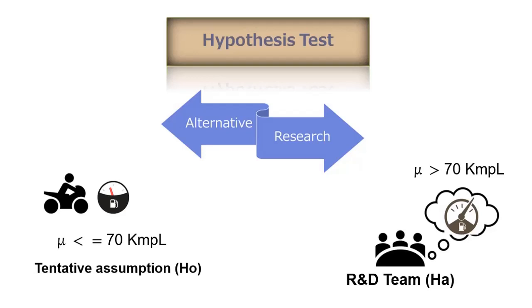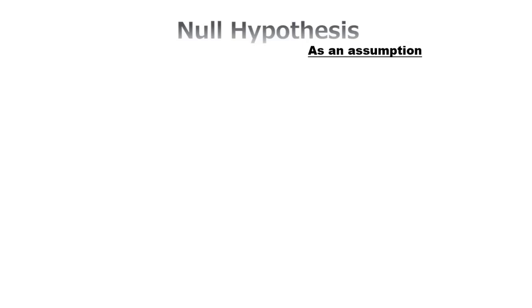We will make the tentative assumption that the new design is not any better than the current design, so that equation is μ less than or equal to 70. If sample results lead to the conclusion to reject H0, then HA is true.